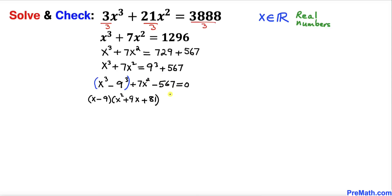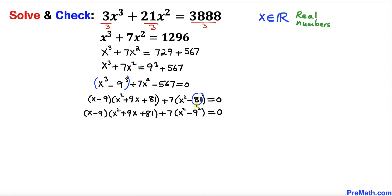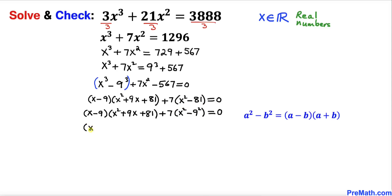Now focusing on the last two terms, 7 is a common factor, so we factor out positive 7 and we are left with x² − 81 = 0. Changing 81 to 9², we apply the difference of squares identity a² − b², giving us 7(x − 9)(x + 9). So the full expression is (x − 9)(x² + 9x + 81) + 7(x − 9)(x + 9) = 0.